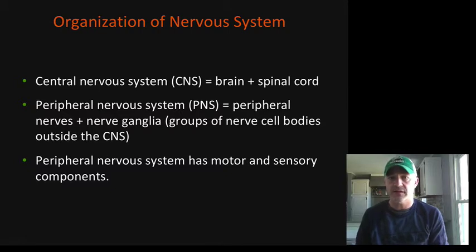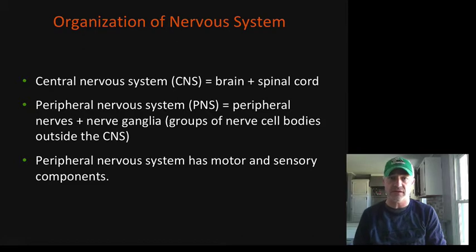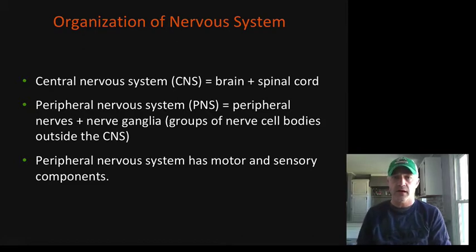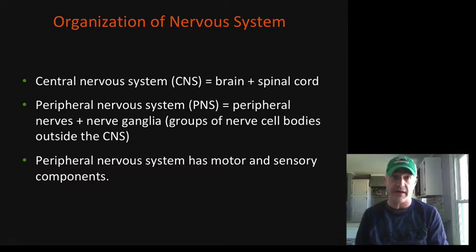The nervous system can really be subdivided into two main parts. We have the central nervous system, which is the brain and the spinal cord. And then the peripheral nervous system is everything that is not that — so all your spinal nerves and cranial nerves.